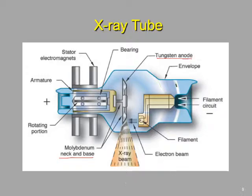Continuing, we have an envelope, which is typically made out of glass. Both the fixed anode tube and this Coolidge rotating anode tube have glass envelopes. The reason is that we need to produce a vacuum for the area where x-ray production is occurring. That glass is a Pyrex-type material.